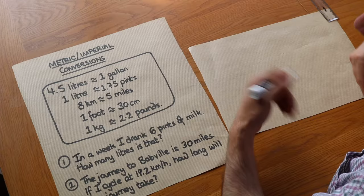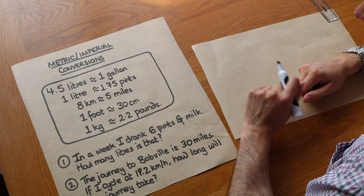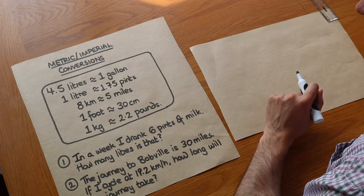However you could get a question where they give you the conversion and then you have to use it to solve a question. So I'm just going to give these to you: 4.5 litres is roughly 1 gallon, 1 litre is roughly 1.75 pints.